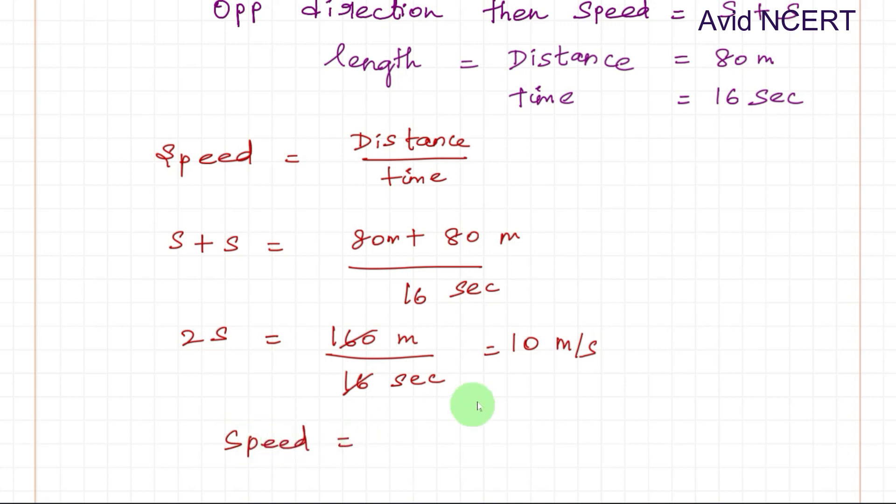Therefore, s equals 10 divided by 2, which equals 5 meter per second.